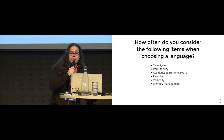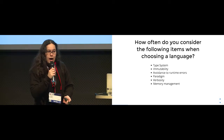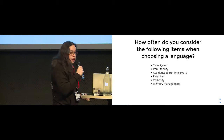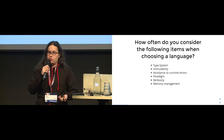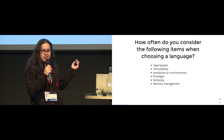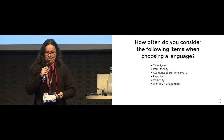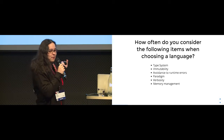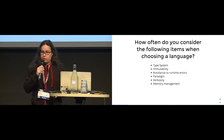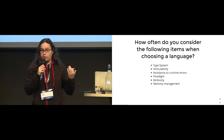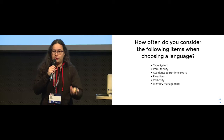But how often do you consider the following topics when adopting a new language? How often do you consider the type system, immutability, the paradigm, how verbose the language is? These are also important topics to consider, and sometimes people don't realize that they're going to influence your final architecture.